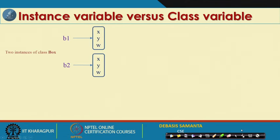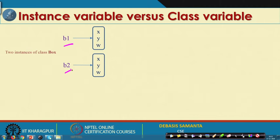We have learned about the simple scope rule. Now there are two concepts in Java related to scope rule: instance variable and class variable. Let us discuss instance variable first. Referring to class Box, if we create two objects b1 and b2, they each have three variables X, Y, W. When b1 is created, one instance is created; when b2 is created, another instance is created. Each object has its own separate instance.